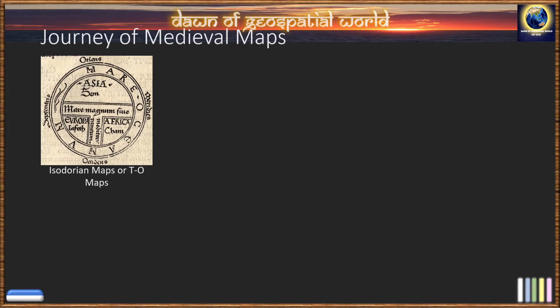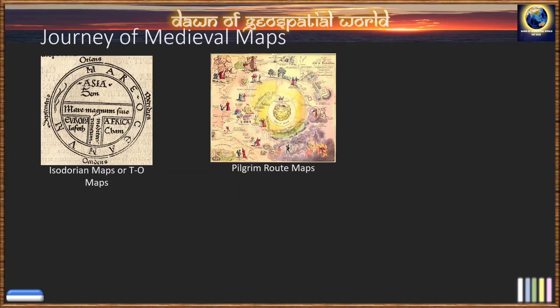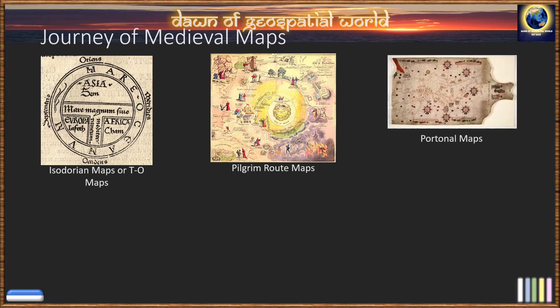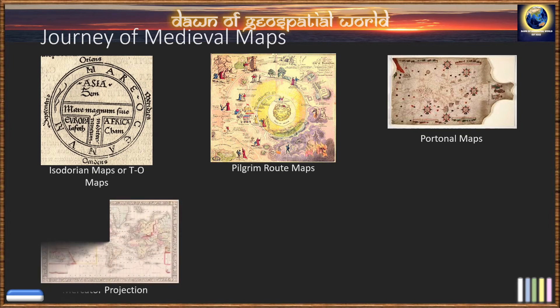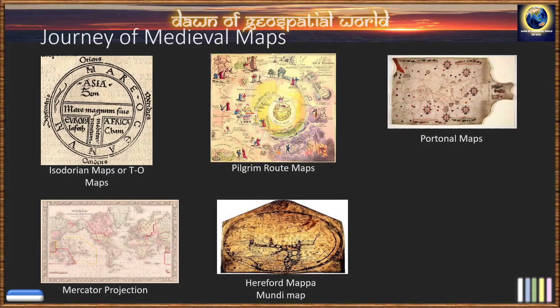The key types of medieval maps include: Isidorean maps, or T-O maps, which are world maps representing all the physical points. Then Pilgrim maps, which were made to show the complete route from northern lands to Jerusalem. Portolan charts are navigational charts of the harbors and trade routes of the Mediterranean Sea. Mercator created the Mercator projection to solve the problem of projecting the 3D sphere of Earth onto a 2D rectangle. The Hereford Mappa Mundi includes impressive geography with continents and some 420 cities and towns.